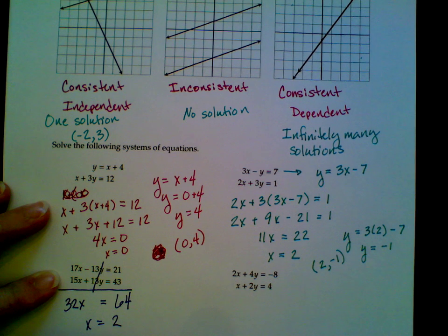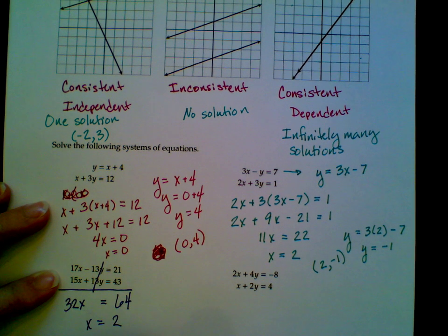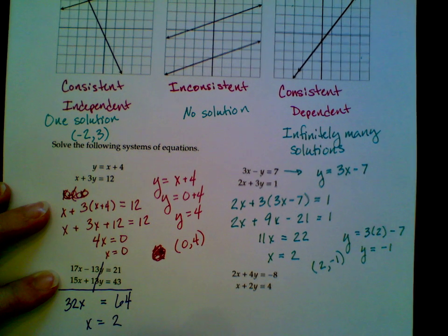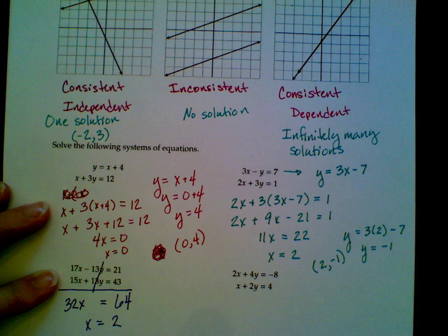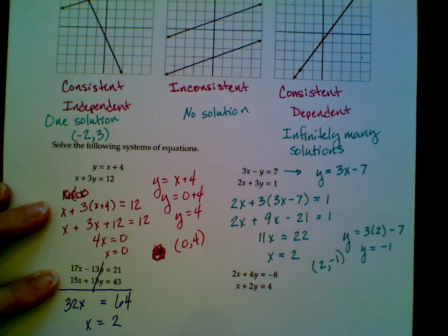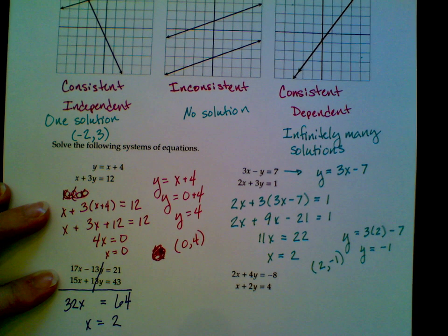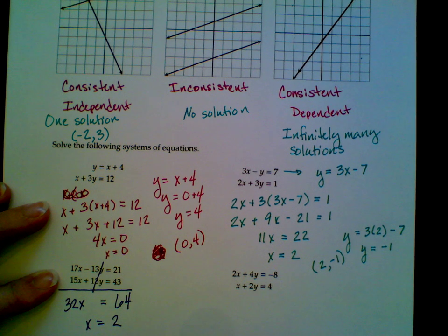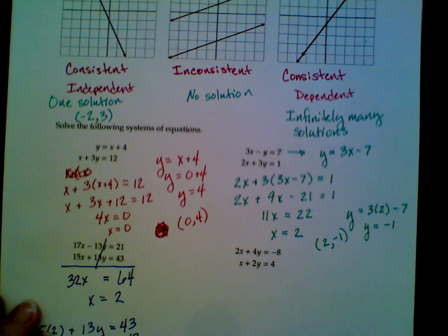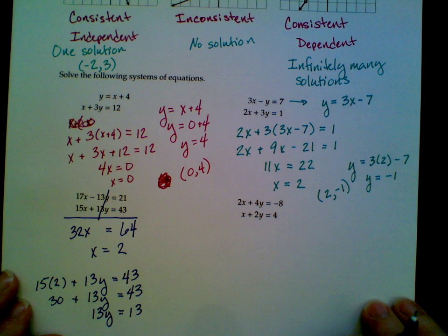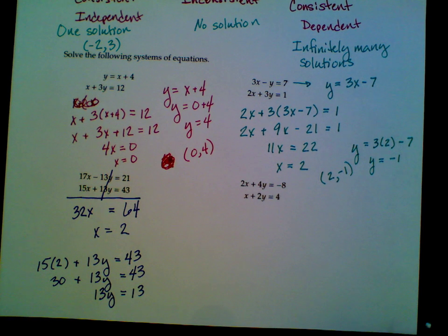So I substitute the 2 in for x. I found out that that's the value of x. This is 30 plus 13y equals 43. When I subtract 30 from both sides, I get 13. I am so sorry about that.